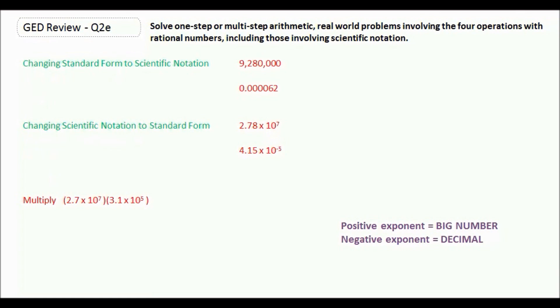So if we want to change from standard form to scientific notation, we want to place a decimal somewhere in our number so that we create a number between 1 and 10. So where we would put this decimal here to create a number between 1 and 10 would be right there, in between the 9 and the 2, because 9 is in between 1 and 10. So we're going to rewrite this. We're going to say 9.28. We chop off all those extra zeros.